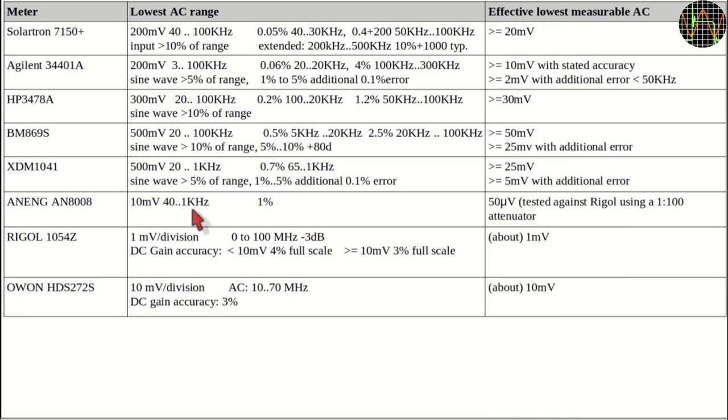This leaves the two scopes. The Rigol 1054Z software-limit bandwidth is changed to 100 MHz, but its gain accuracy is only 3% above 10 mV or 4% below. I consider a signal of one division peak-to-peak as the practical limit, which translates to about 1 mV. The Rigol can calculate and show true RMS directly.